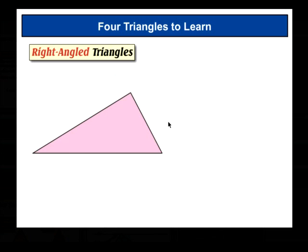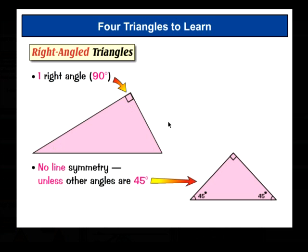Right, well, right-angled triangles have one right angle. They have no line symmetry unless the other two angles, this one and this one, are 45 degrees, like this triangle here, in which case it becomes an isosceles triangle.